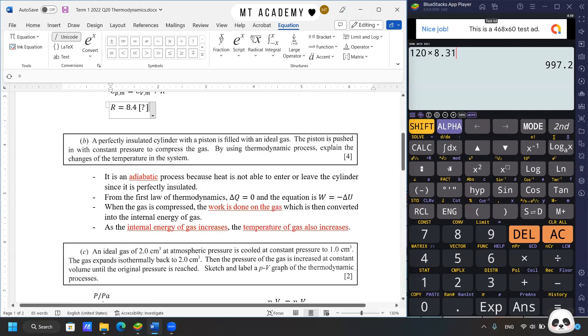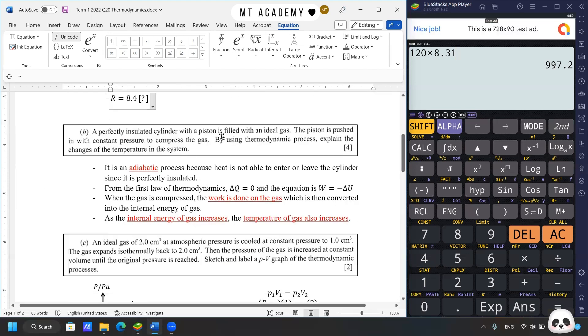A perfectly insulated cylinder with a piston is filled with hydrogen gas. The piston is pushed in with constant pressure to compress the gas. Using thermodynamics, explain the temperature changes in the system. This question is also quite confusing. You mentioned perfectly insulated, which should be referred to as adiabatic process, but also mentioned constant pressure. From my interpretation, the constant pressure refers to the force on how the piston is pushed in, so I would ignore the constant pressure and refer to this as an adiabatic process.